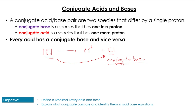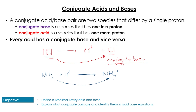Now let's try the inverse with a base to find a conjugate acid. Taking ammonia NH₃ and adding a proton — because a conjugate acid has one more proton — we get NH₄⁺. Since NH₃ has gained one proton, NH₄⁺ is considered the conjugate acid of ammonia.